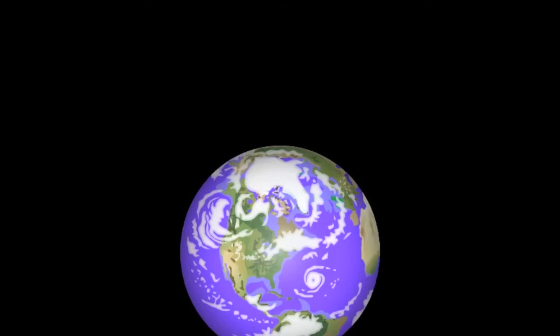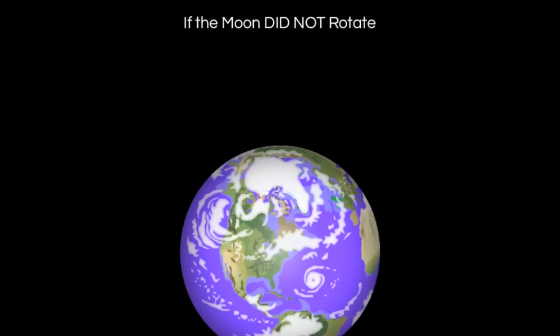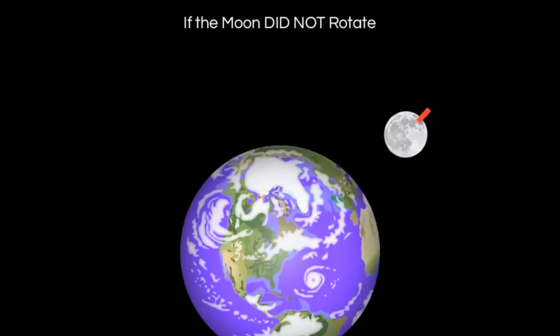Here's the Earth. The moon orbits the Earth once every 27.3 days. To visualize this, let's imagine sticking a large red pole into the moon and pay attention to where that red pole is pointing if we had a moon that did not rotate. Notice now it's pointing at Earth, now it's pointing out into space — we are able to see all different sides of the moon.